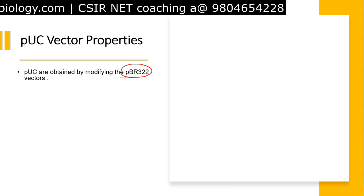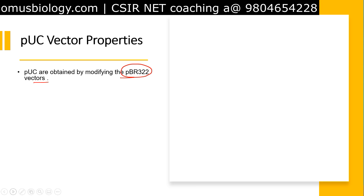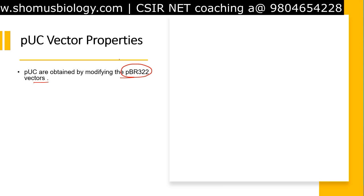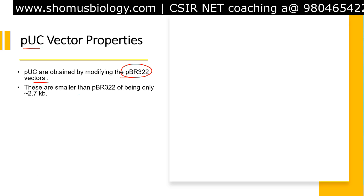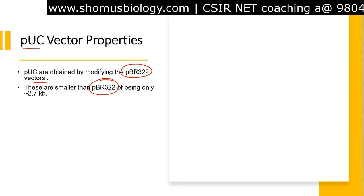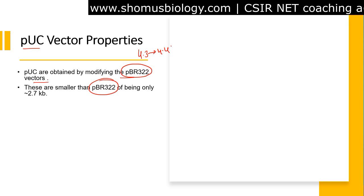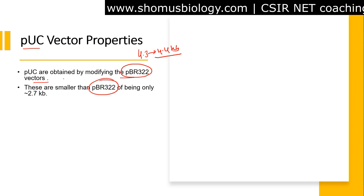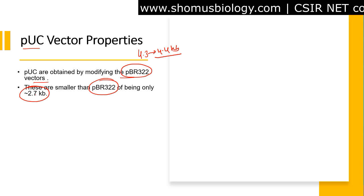The properties of the pUC vector: they are obtained by modifying the pBR322 vectors. So once we modify the pBR322 vector, they become pUC vectors. These vectors are smaller than pBR322. pBR322 vectors are approximately 4.3 to 4.4 kb in length, while the pUC vectors are about 2.7 kilobases in length.